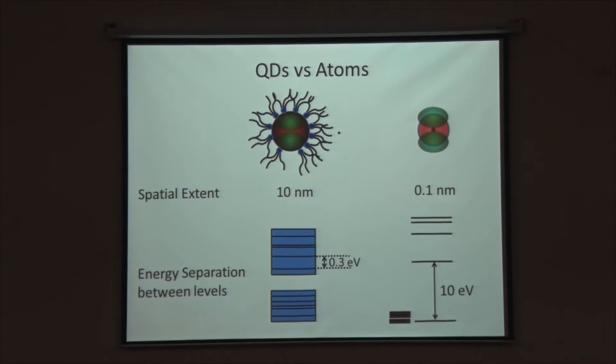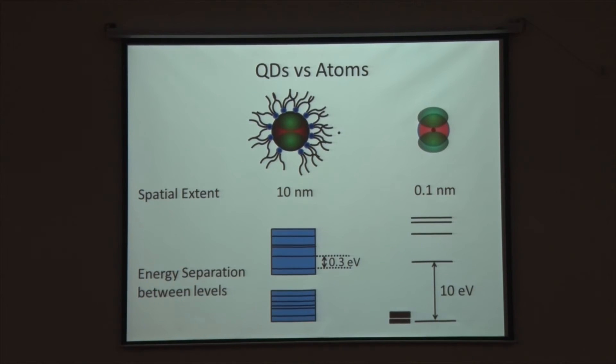Then of course there comes the criticism. Why should we call them artificial atoms at all? Is that comparison actually justified? This certainly is a daunting problem from the point of view of chemistry because as chemists we like to think of atoms as anything which can react. The obvious question is: can a quantum dot be made to react? That is the question which we set out to answer.